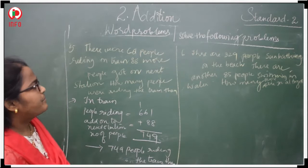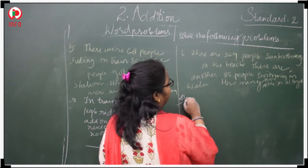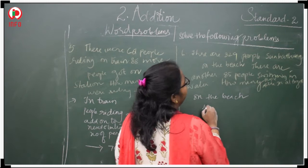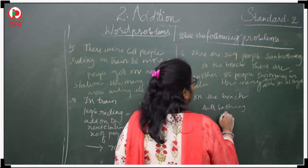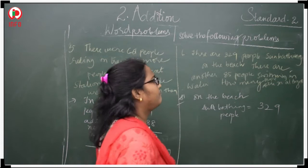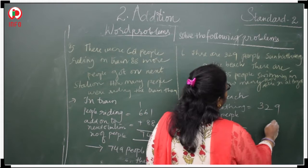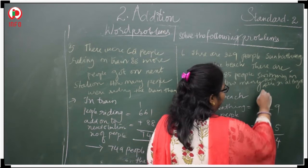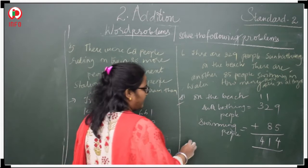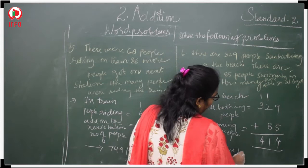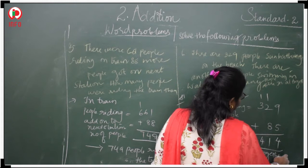There are 329 people on the beach sunbathing. People swimming is equal to 85. You have to add 4, 11, 4, 41. So how many people are there altogether? 414 people are there all together. Understood children?